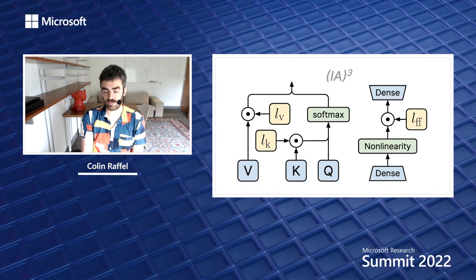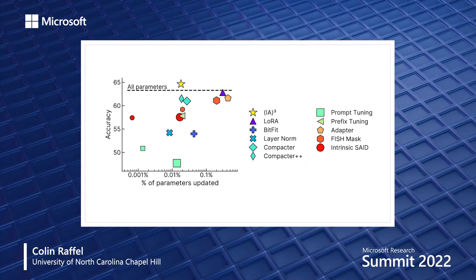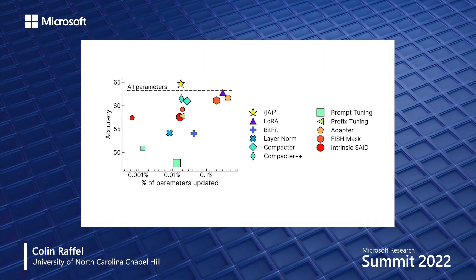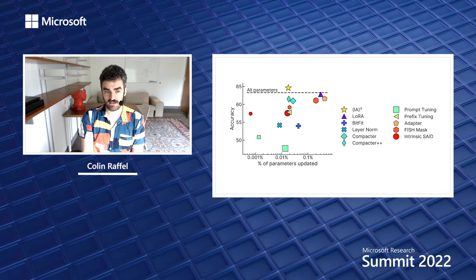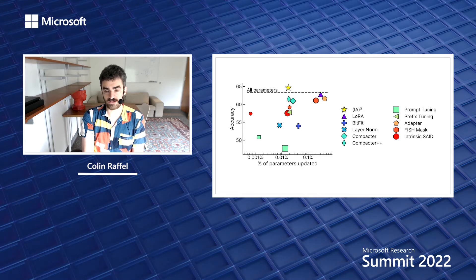If we evaluate IA3 on parameter-efficient training — measuring what accuracy we can achieve at a particular parameter budget — we fine-tune a model called T0, based on T5, on a variety of NLP tasks in a few-shot setting with very few labeled examples per task. We compare it to many existing parameter-efficient methods, including the FISH Mask. Interestingly, IA3 not only produced the best tradeoff between number of parameters updated and performance, but was the only method that outperformed training all of the model's parameters. So in few-shot settings, IA3 is not only more parameter-efficient but also achieves better accuracy.